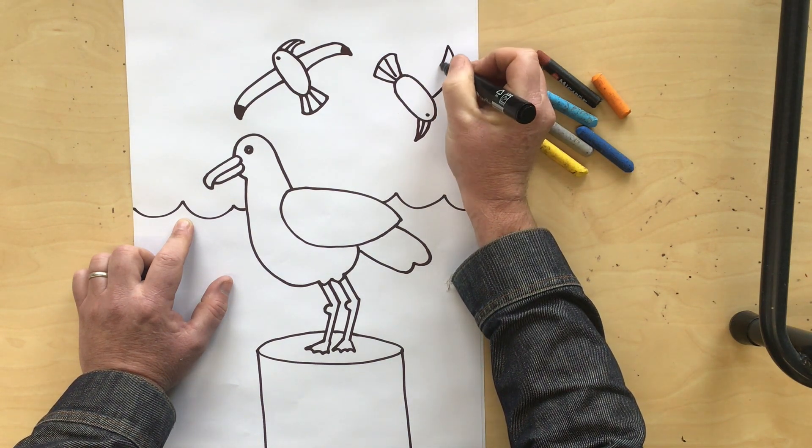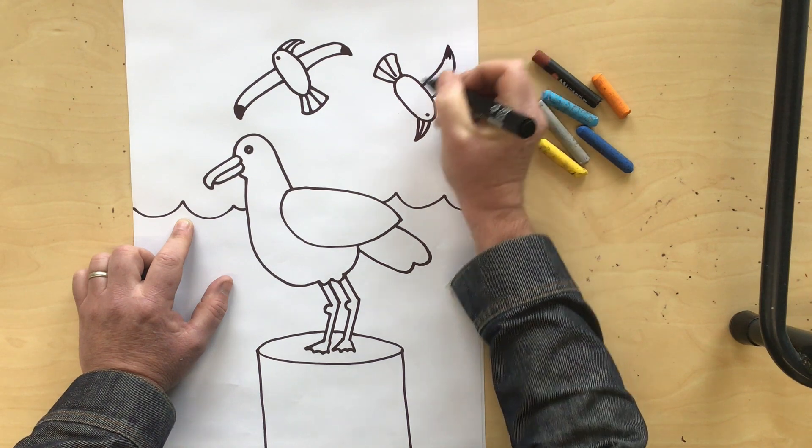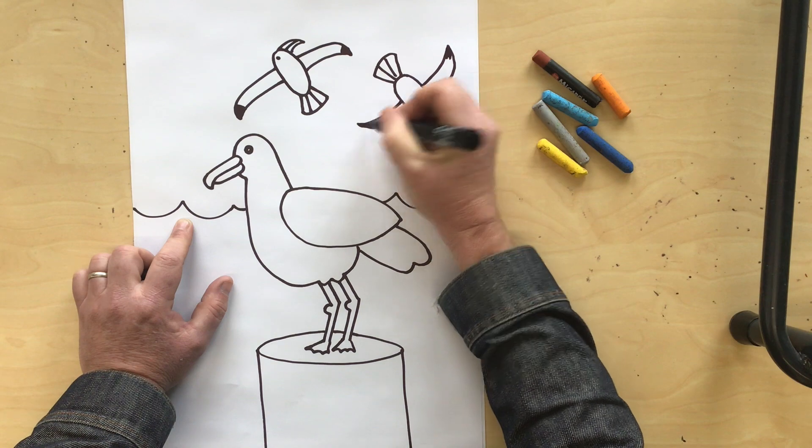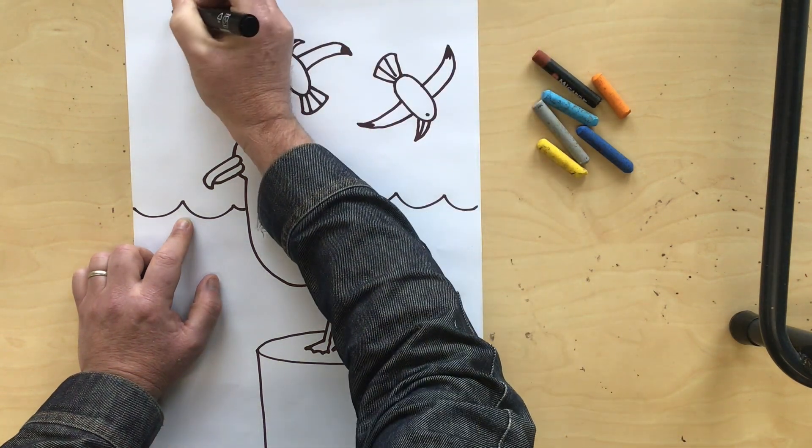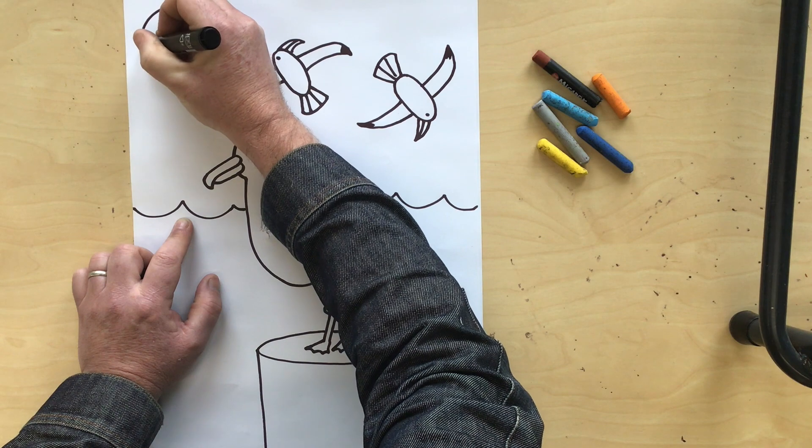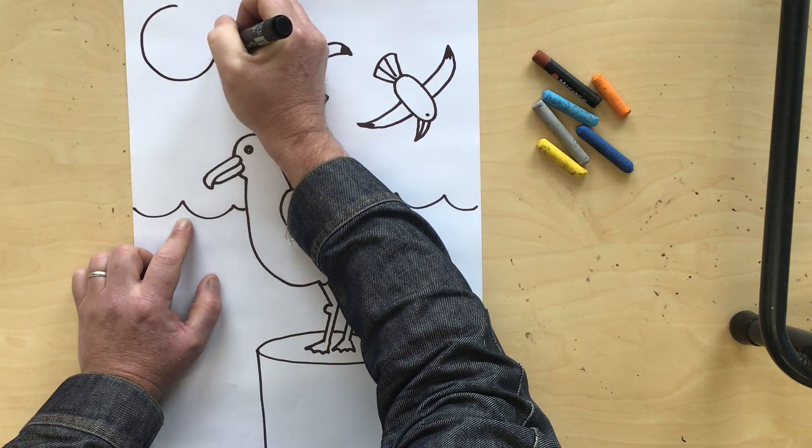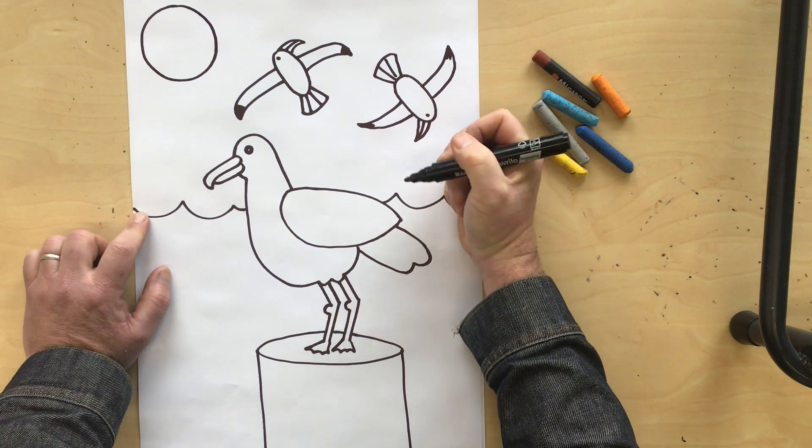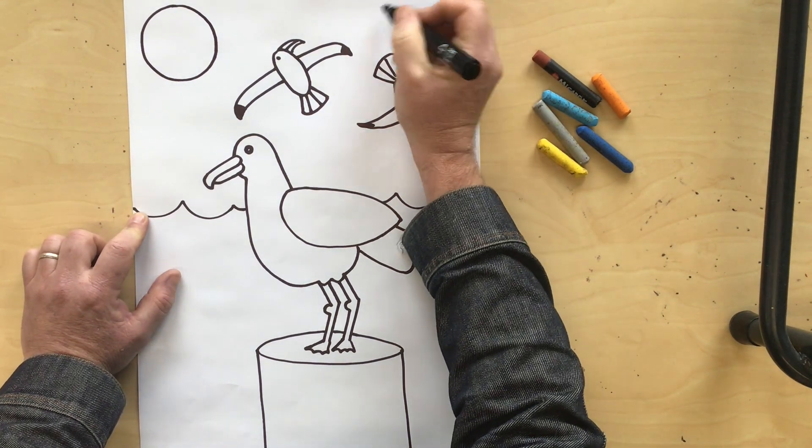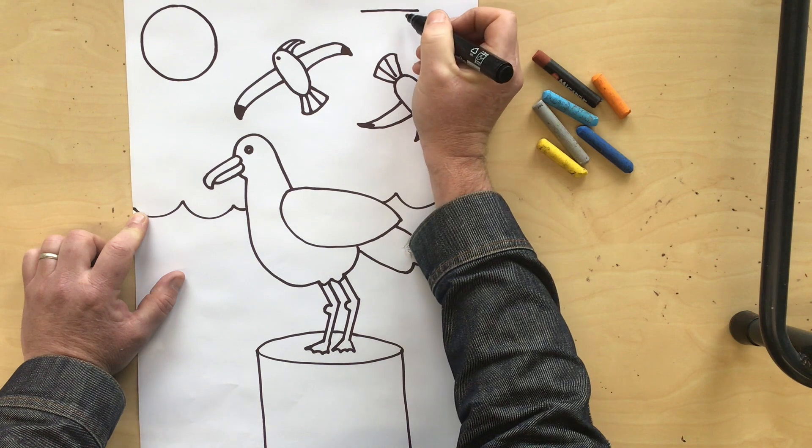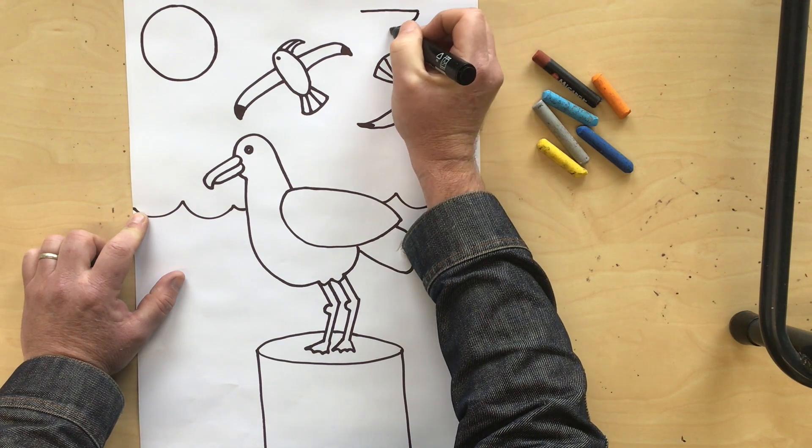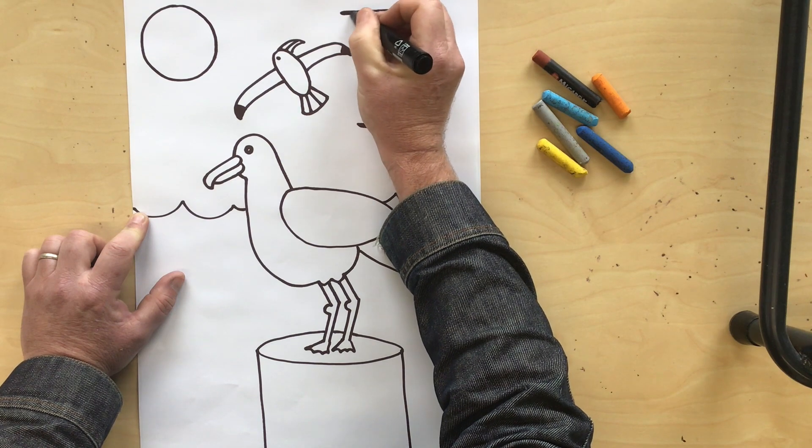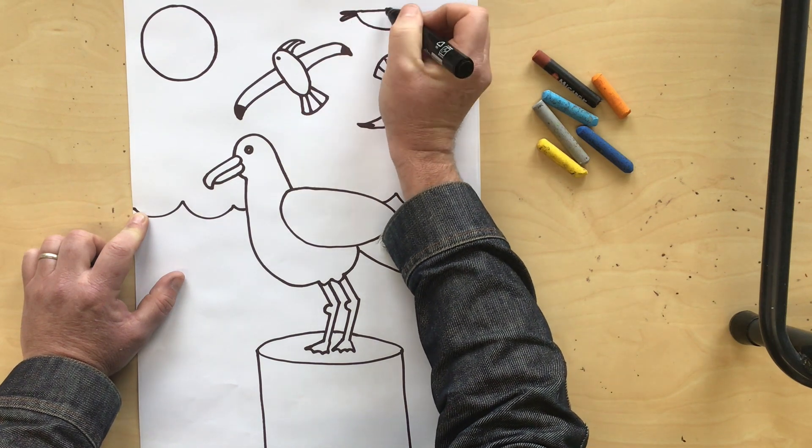And a wing. And maybe we could put the sun in the sky and maybe one more little seagull flying away. We'll do this sideways, let's do this shape this time. Let's put a little tail on, maybe some wings.